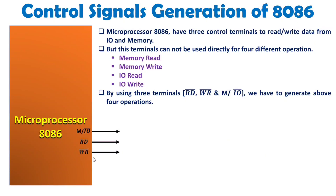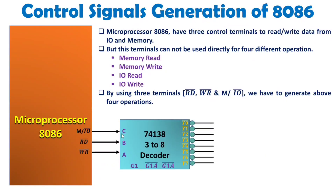To generate those 4 control signals, we will use a 74138 3-to-8 decoder. This decoder has 3 inputs — connected to A, B, C — and 8 active-low outputs: Y0 bar through Y7 bar. To enable this IC, it has 3 enable terminals: G1, which is active high and connected to VCC, and G2A bar and G2B bar, which are active low and connected to ground. Once selected, the decoder can be operated.